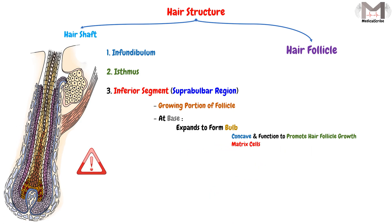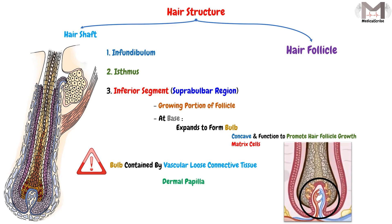The bulb is surrounded by a vascular loose connective tissue called the dermal papilla. Because the dermal papilla has vessels and nerves, it nourishes the cells in the bulb in order to make them grow normally. Together, the inferior segment, the isthmus, and the infundibulum make up the complete hair follicle structure.